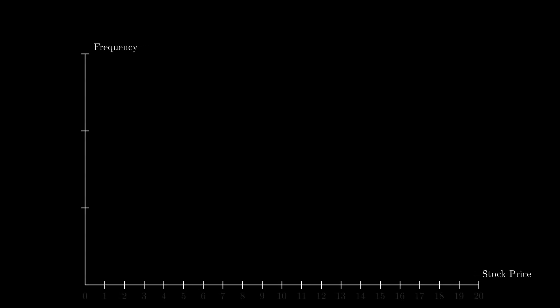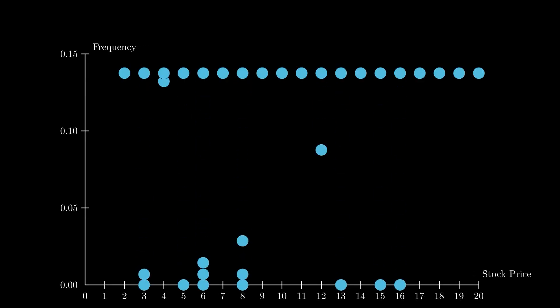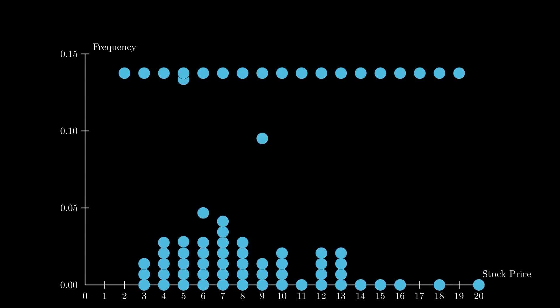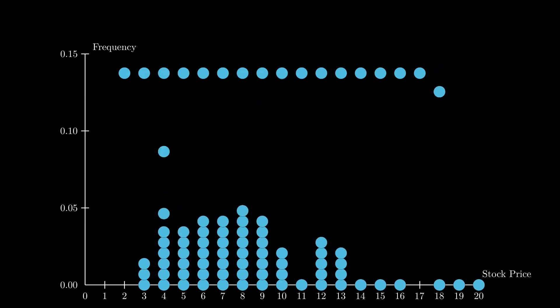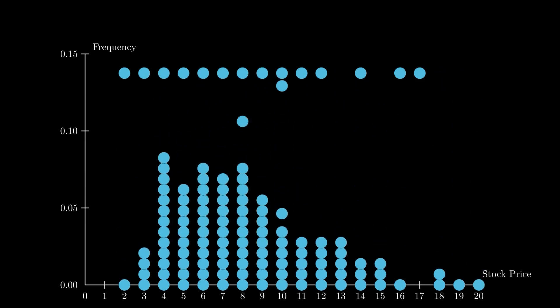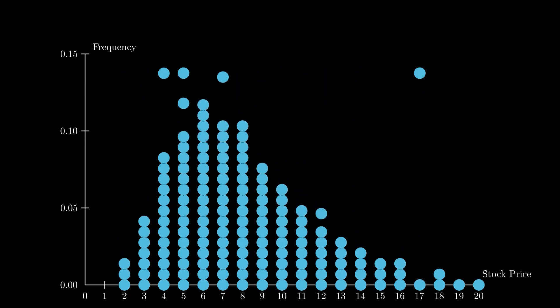To explain this concept further, we will imagine a discrete log-normal distribution of stock prices at expiration, where each possible price is in 50-cent intervals. A log-normal distribution is just one where taking the log of the values gives you a normal distribution. It works for stock prices because stocks can't drop below zero, and tend to follow this pattern historically.